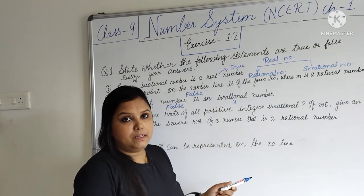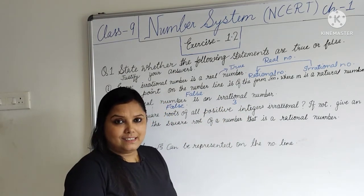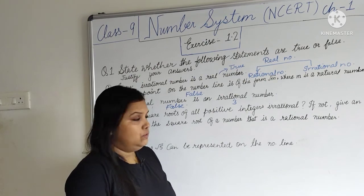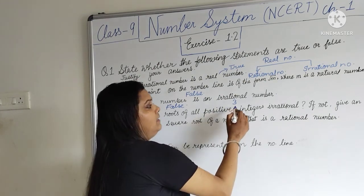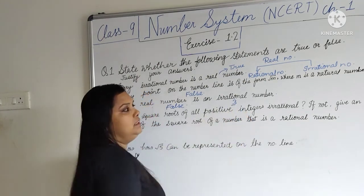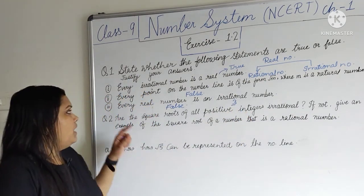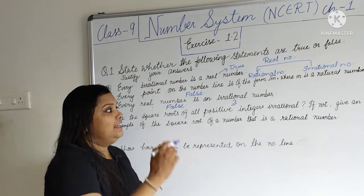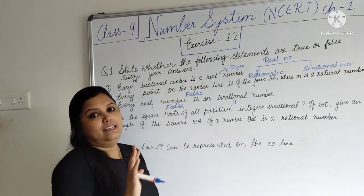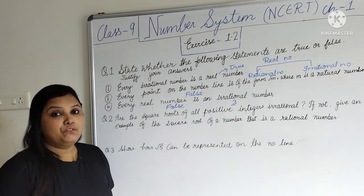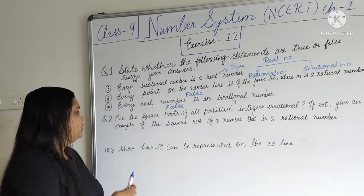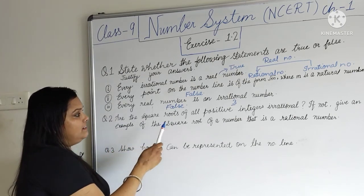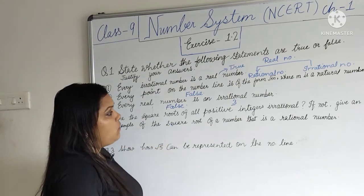Let's take one example: suppose we write 3 — it is a real number, but is it an irrational number? No, it is not an irrational number. So every real number is not an irrational number.